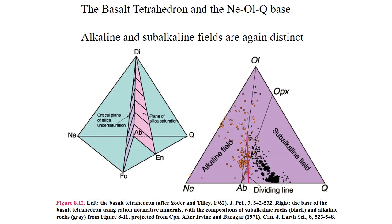Our second way of describing magmatic series is using the basalt tetrahedron and the nepheline-olivine-quartz base. Alkaline and subalkaline fields are very distinct in these tetrahedrons and ternary diagrams. The nepheline-diopside-enstatite-quartz tetrahedron, called the basalt tetrahedron, is useful because it describes basalts that are silica undersaturated, silica saturated, and silica oversaturated. The diopside-albite-enstatite plane is called the plane of silica saturation: to the right of it a silica polymorph is stable, indicating silica oversaturation, whereas to the left olivine is stable without a silica polymorph.